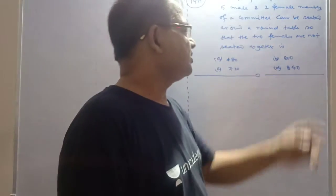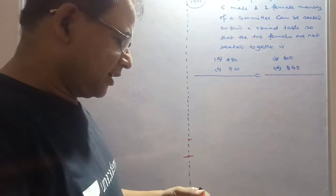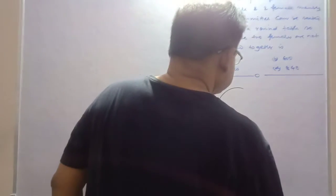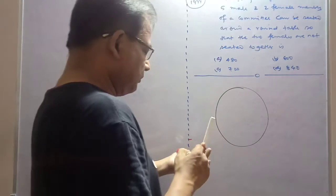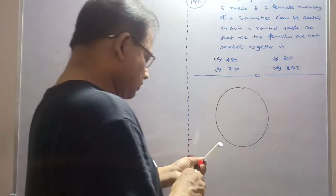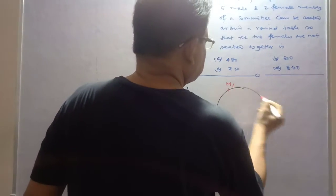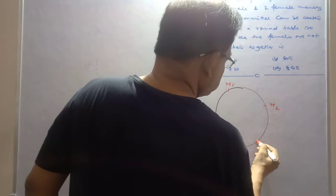Again, the two females should not sit together. So suppose if you consider like this, this is a round table. So this is M1, this is M2, this